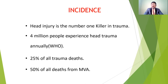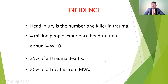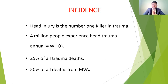What is the incidence — how often does head injury happen? Head injury is the number one killer in trauma and holds the number one place in mortality. Many people die because of head injury due to road traffic accidents. According to WHO statistics, 4 million people experience head trauma annually. Out of 4 million, 25% may die because of severe head injury and severe complications of brain injury.